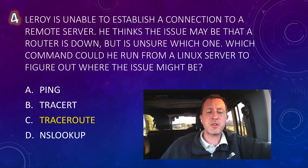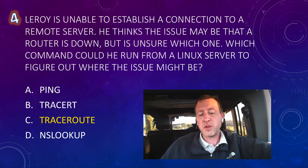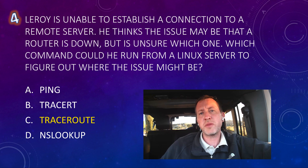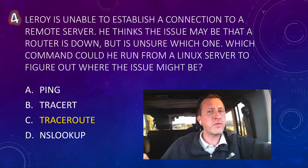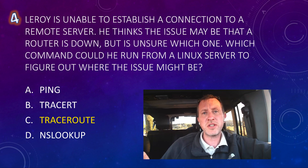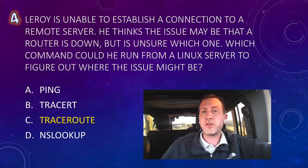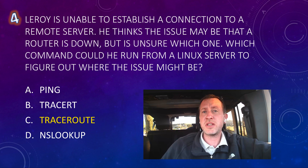Question four: Leroy is unable to establish a connection to a remote server and thinks a router may be down but is unsure which one. Which command could he run from a Linux server to figure out where the issue might be? Ping tells us the round-trip time in milliseconds but won't tell us which specific router is down. We want to run a traceroute. The trick is knowing which traceroute command to use — on Windows it's an abbreviated version, but on Linux, Unix, Mac, and Cisco routers and switches, you use the full word: T-R-A-C-E-R-O-U-T-E. So option C, the full word traceroute, is correct.